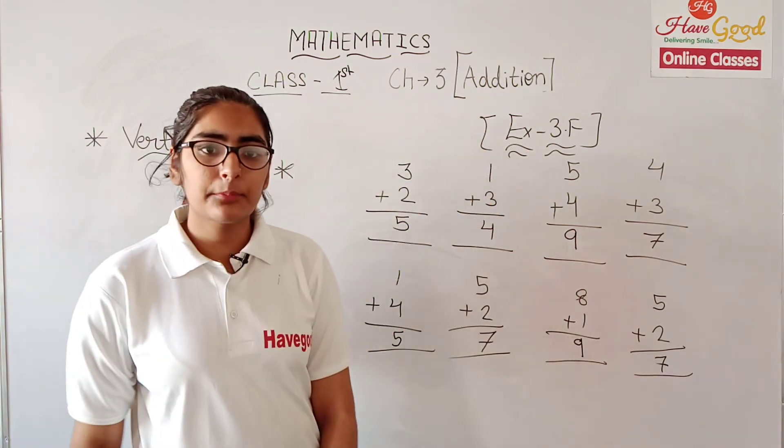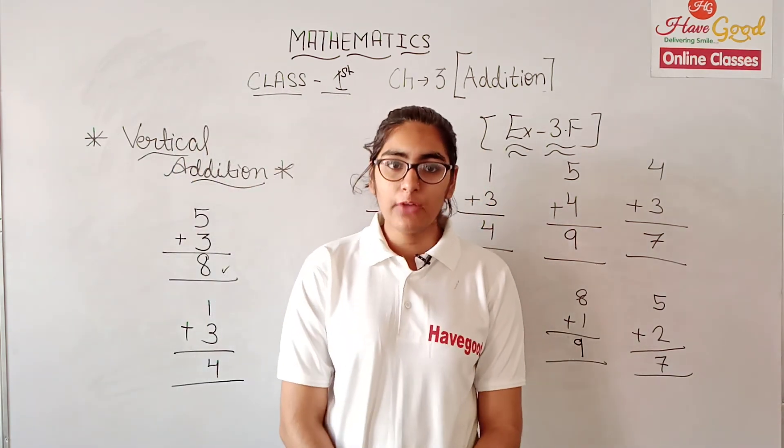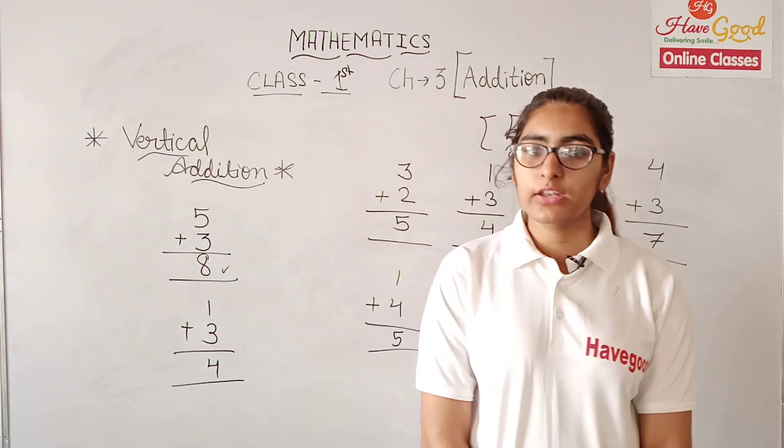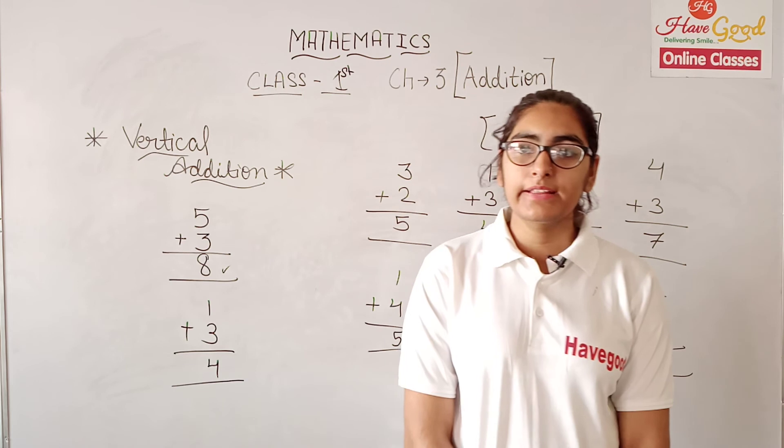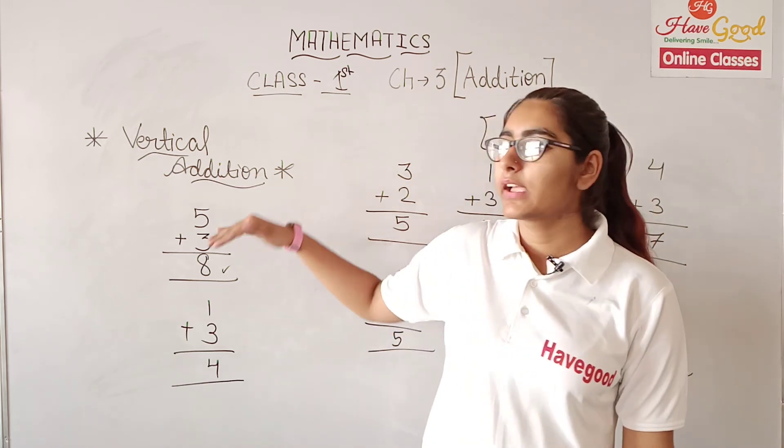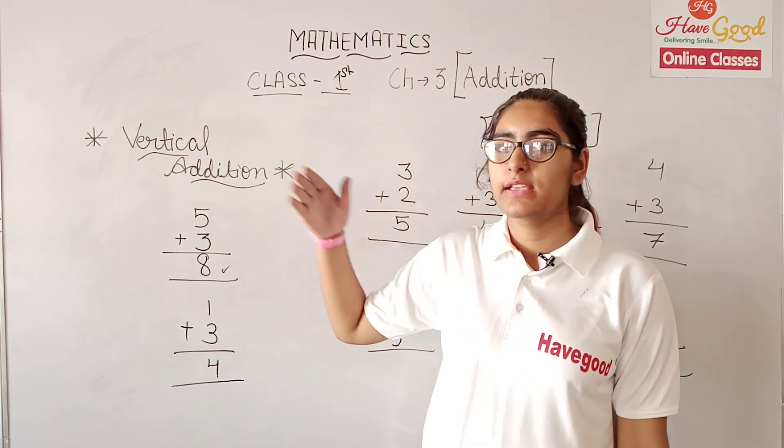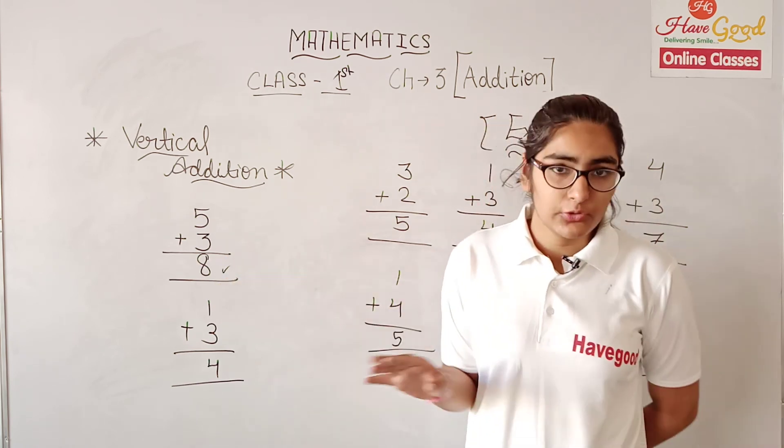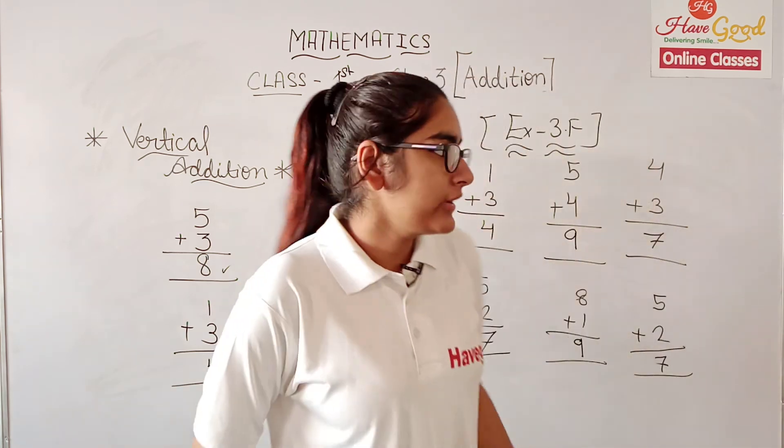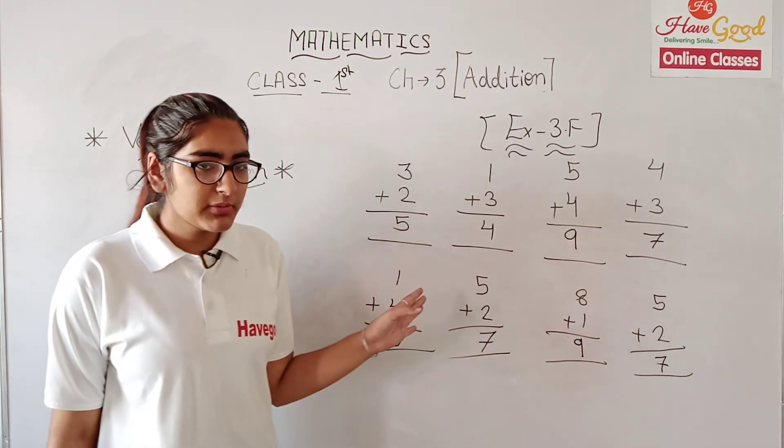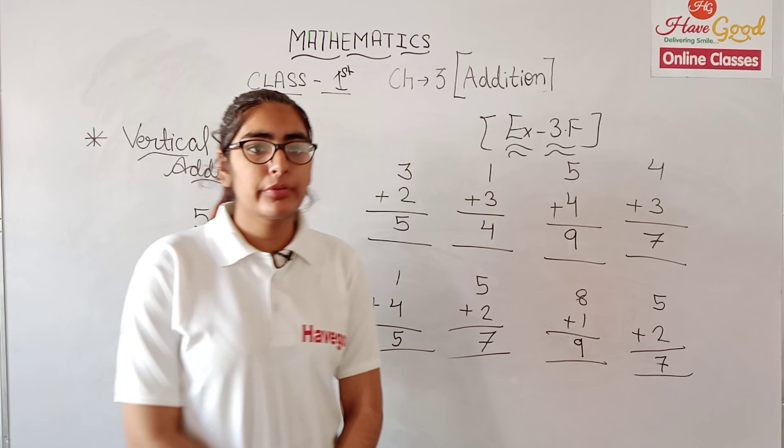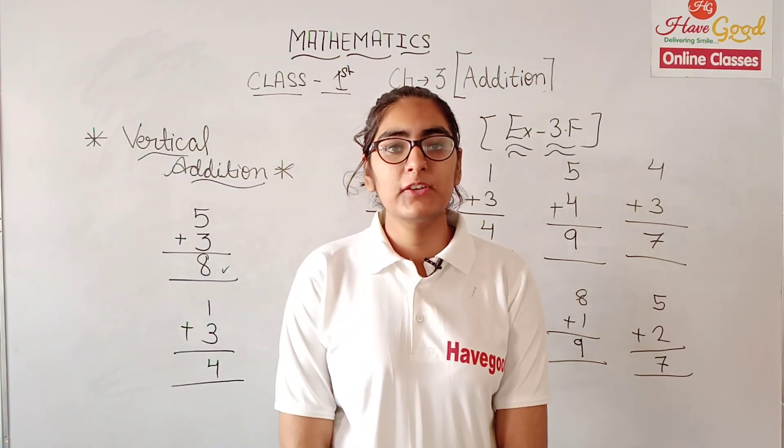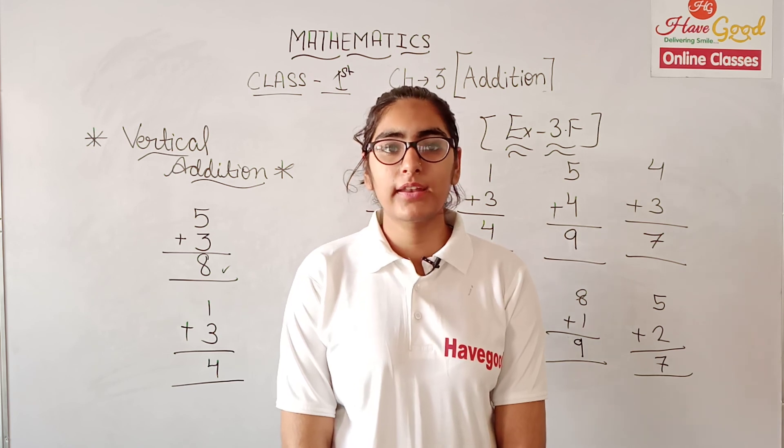So this was our vertical addition. We start with the first number, then we do forward counting by the second number. When we finish counting, that is our answer. Thank you and have a nice day.